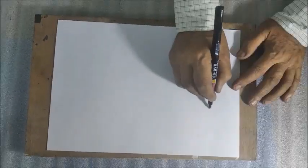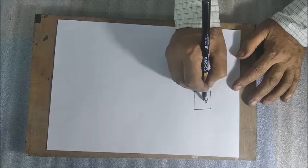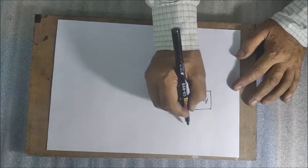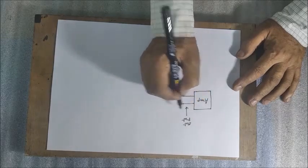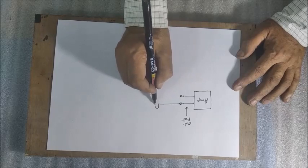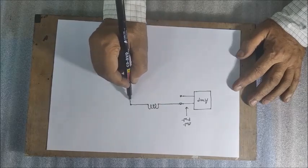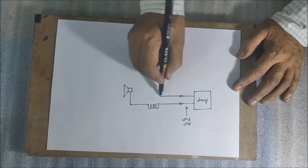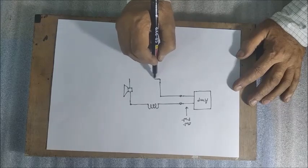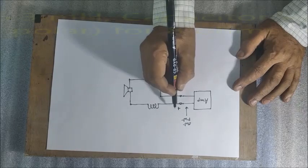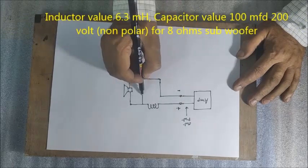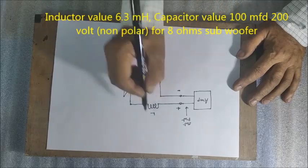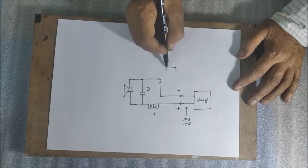Now let us see how we can make it. First, let us draw a diagram of the filter network with an inductor and a capacitor. This is a circuit for 12 dB per octave slope. The crossover point is fixed at 200 cycles. From calculations, we get the value of inductor to be around 6.3 mH and the capacitor value around 100 microfarad.